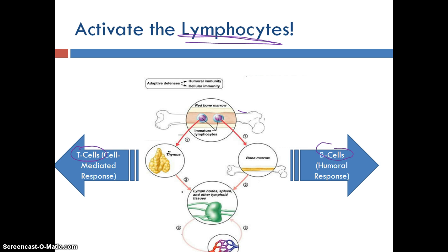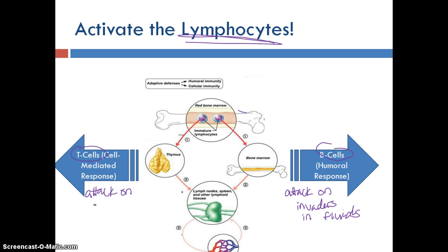B cells and T cells are different because they develop in different parts of the body — the bone marrow for B cells and the thymus for T cells. These cells circulate around in our lymphatic system, in our interstitial fluid, and in our blood, waiting to be activated and looking to kill off any invaders. When B cells are activated, they invoke a response called the humoral response — an attack on invaders within the fluids of our body. T cells will become activated and invoke a cell-mediated response, which is an attack on infected cells.